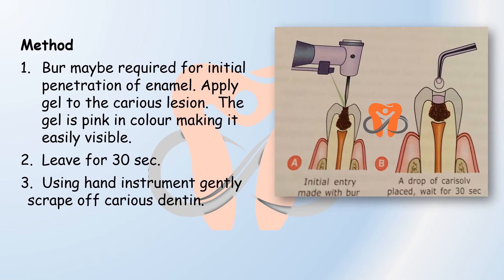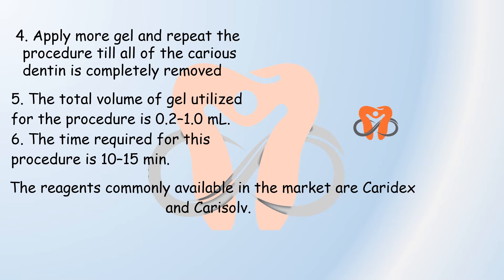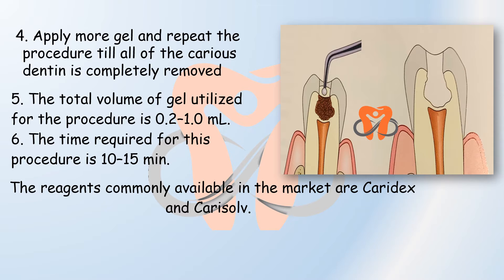Coming to the method. A burr is required for initial penetration into the enamel. If you look at the diagram, you will observe we use this burr to cut the surface enamel and make an entry point. After that, the gel is applied — which is in the form of a drop — to the caries lesion. This gel is pink in color, making it easily visible. We leave the gel in position for 30 seconds, then use hand instruments to gently scrape off the caries dentine.